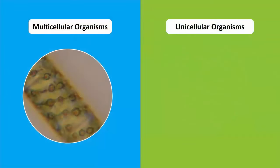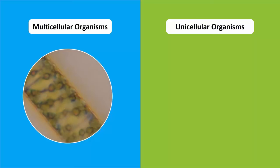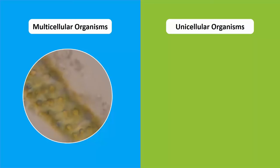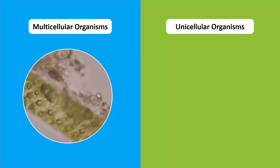Well, cells are very, very tiny. Some multicellular organisms made up of fewer cells end up being microscopic, whereas organisms made up of millions and billions of cells, like us, can be seen easily.